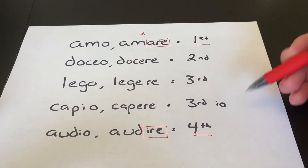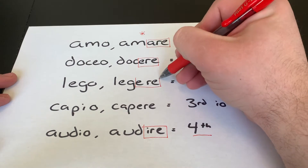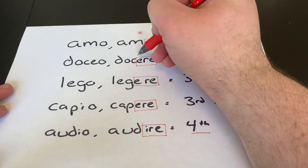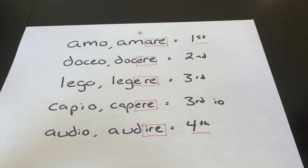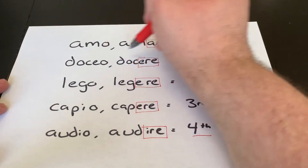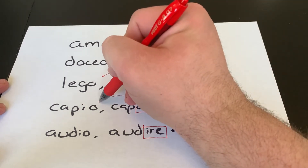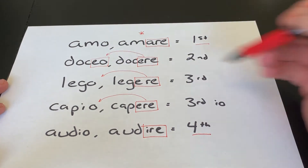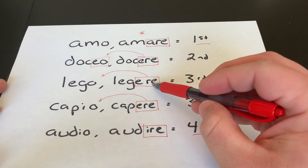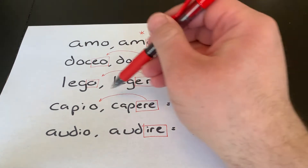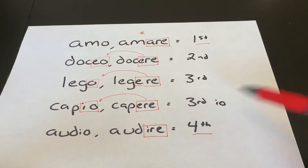The tricky thing about second, third, and third IO is that they all have second principal parts — infinitives — that end in ERE. Technically there is a macron over the E in second, but that might not show up on all the texts or worksheets you might see. So when you see ERE, you look back at the first principal part. If you see ERE and the first principal part ends in EO, that tells you it's second conjugation. If you see ERE and the first principal part ends in O, that tells you it's third. And if you see ERE and the first principal part ends in IO, that tells you it's third IO.